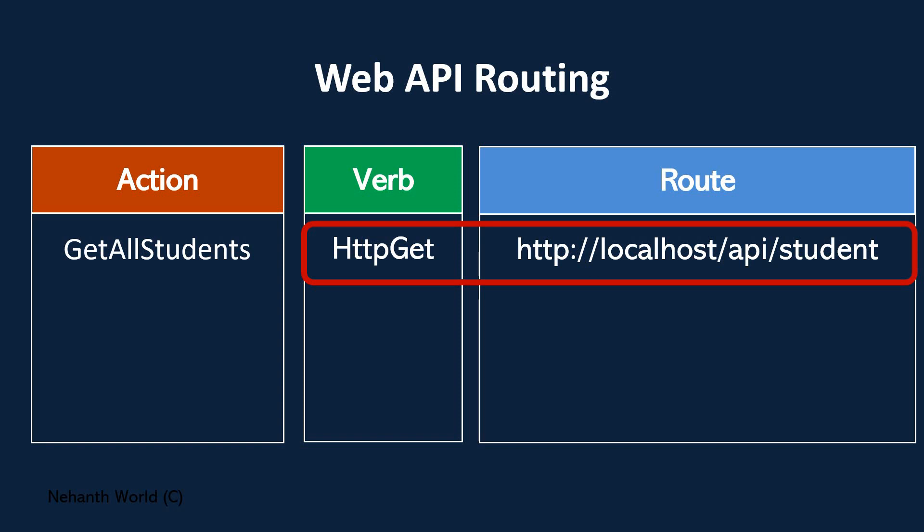If you look at Postman, where you can test a WebAPI service, you need to select the kind of request you want to make — whether it's HTTP GET, POST, DELETE, PUT, and so on — and then provide the URI. So it is the combination of the verb and the URI.